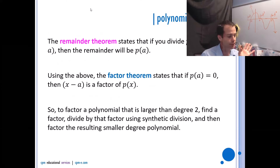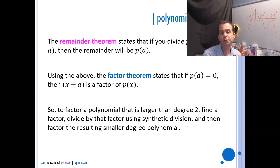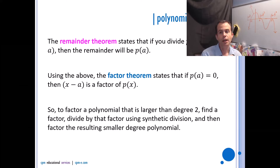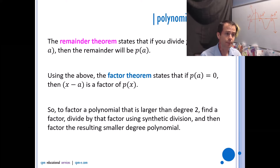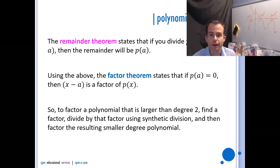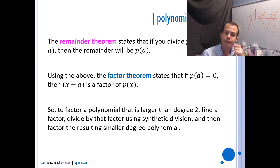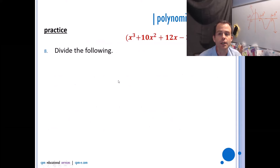The remainder theorem states that if you divide p(x) by (x − a), the remainder will be p(a). So if you only need the remainder, just plug a into the original polynomial. The factor theorem is really the same thing — if p(a) = 0, then (x − a) is a factor, because a factor divides evenly with no remainder. To completely factor a polynomial larger than degree two: find a factor first using the factor theorem, divide it out using synthetic or long division, then factor the resulting smaller-degree polynomial.